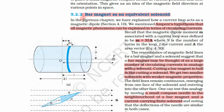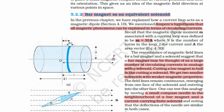Now we will consider a bar magnet as an equivalent solenoid. We know what a bar magnet is, and previously we have seen that the magnetic field lines for a bar magnet and solenoid are the same. So this time we will take a solenoid and show that the magnetic field produced by it is very similar to one produced by the bar magnet. This is the equivalence.